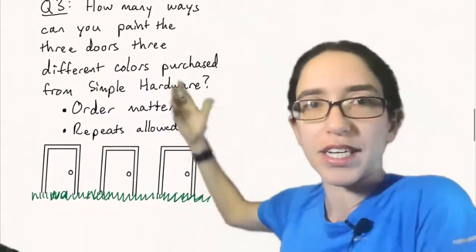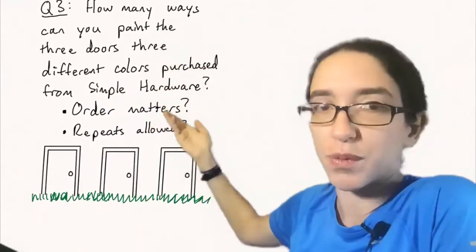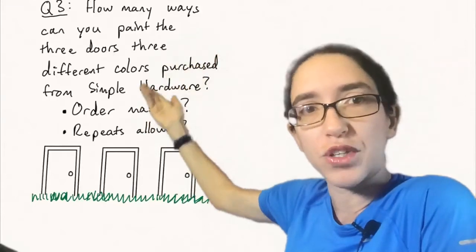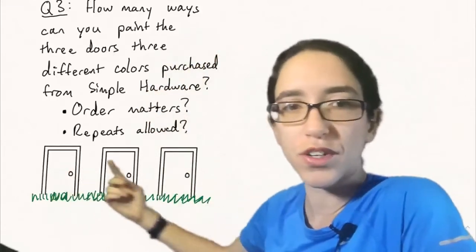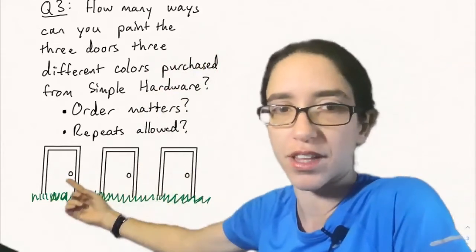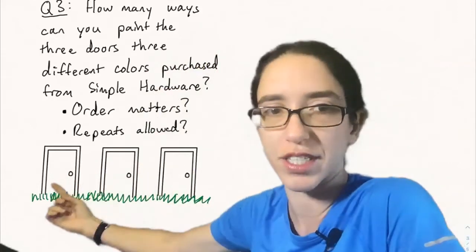So here's another variant. Now we want to understand what happens when order matters. So how many ways can you paint the three doors three different colors purchased from simple hardware? Well there's an ordering to these doors. It's different if I colored this one red and this one green versus this one green and this one red.